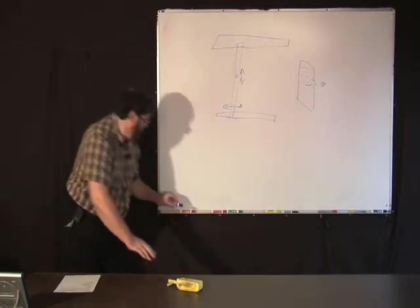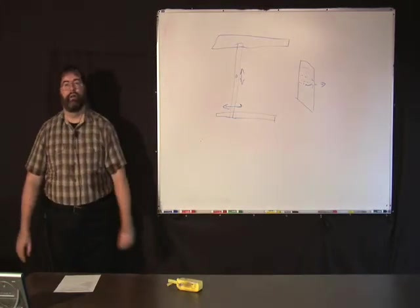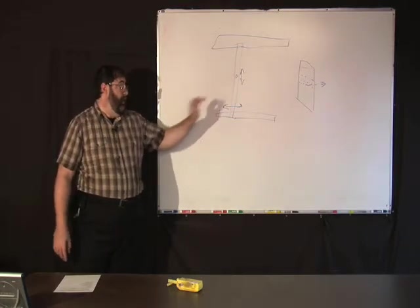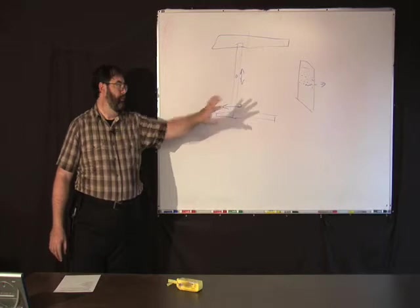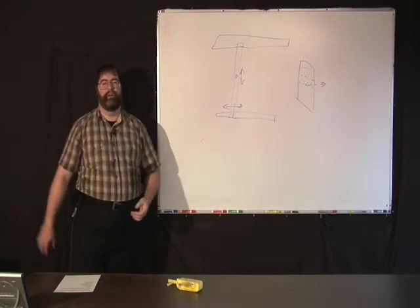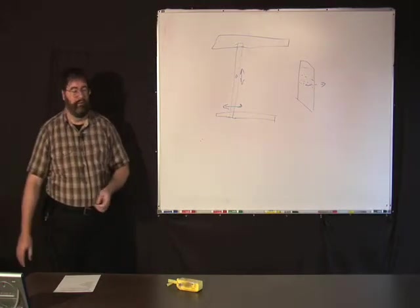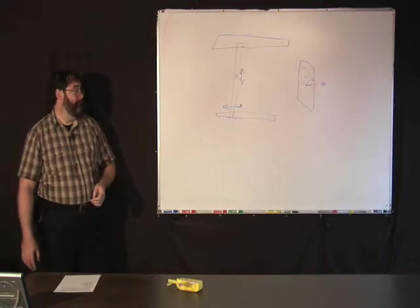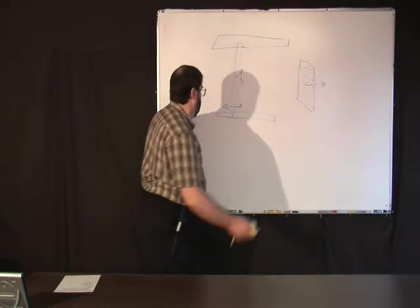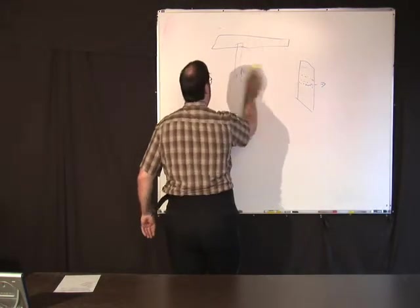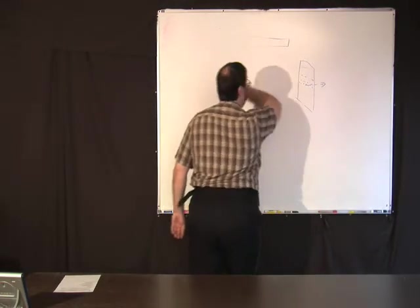Now all these near field ranges will also have absorber in them because you want to hide some of the structure of the scanner, the support structure of the antenna, the chamber itself. You want to get that out of the measurement if possible. So these are all applications where you would use this type of absorber, the various different types of antenna ranges. There's also variations on that.